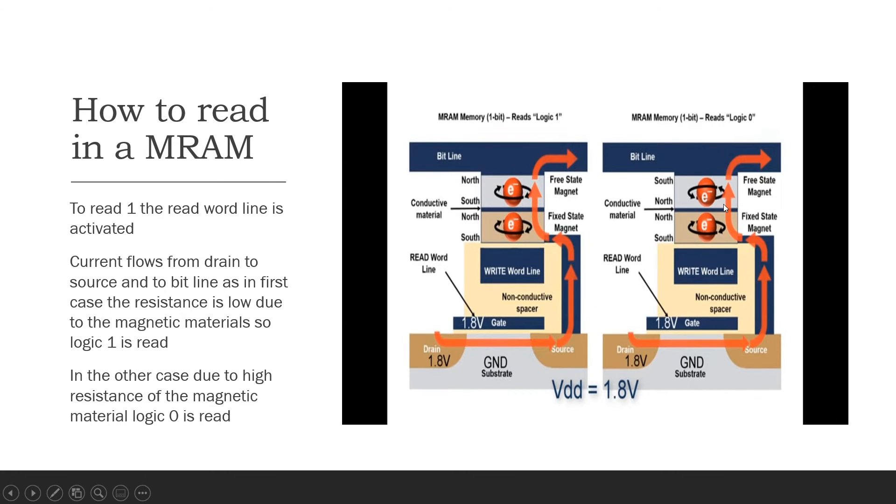For other state, the two magnetic states are opposite in the sense opposite in the spin. One is clockwise and another one is anti-clockwise. So here, same the current due to the read word line is enabled, the current flows. And what happens is due to the high resistance, a low current is passed. So it is considered as 0 in case of our digital.